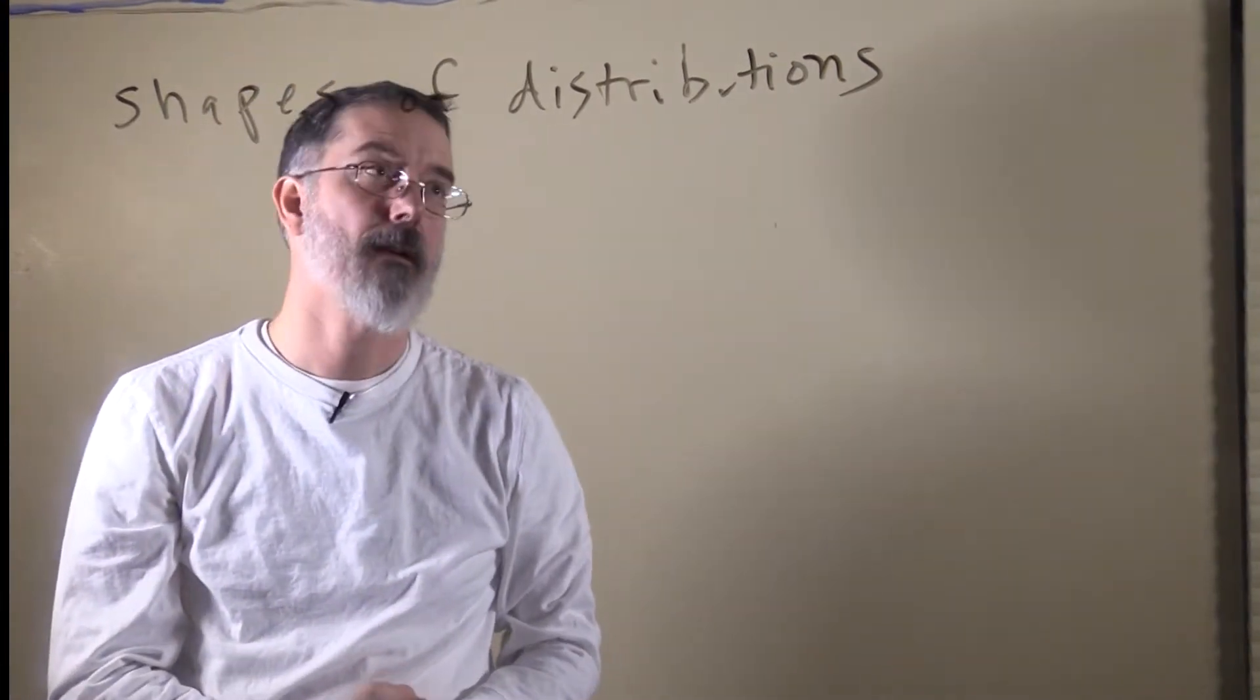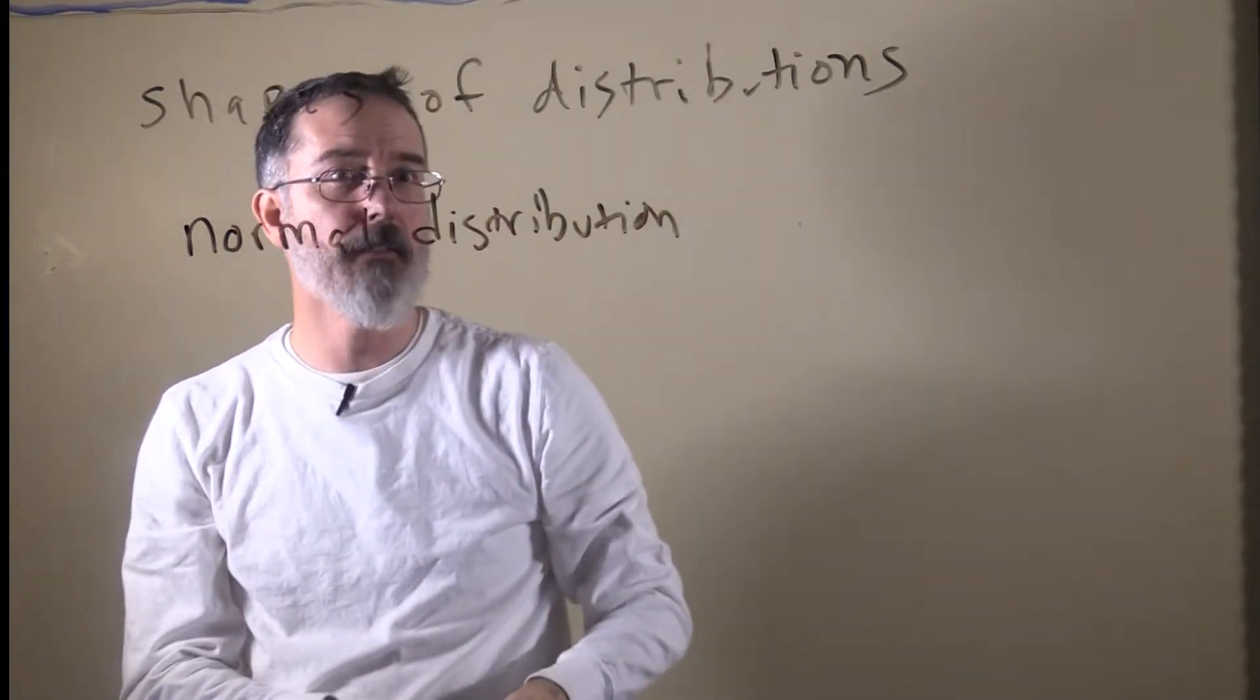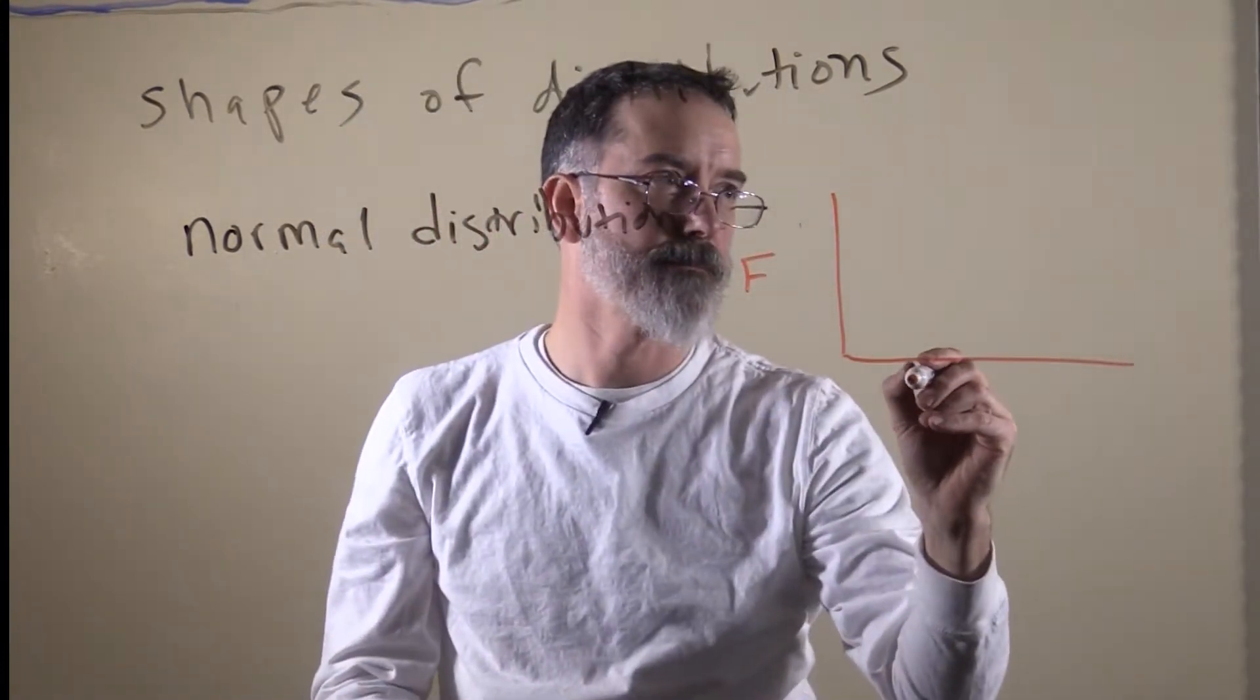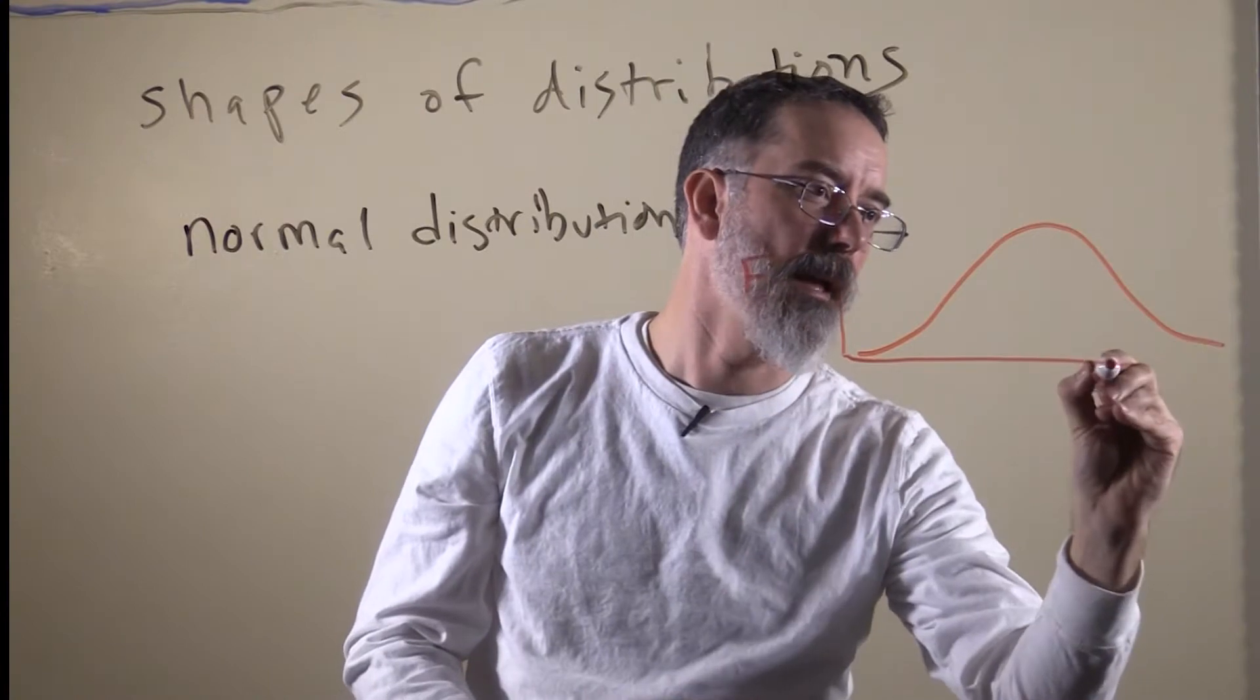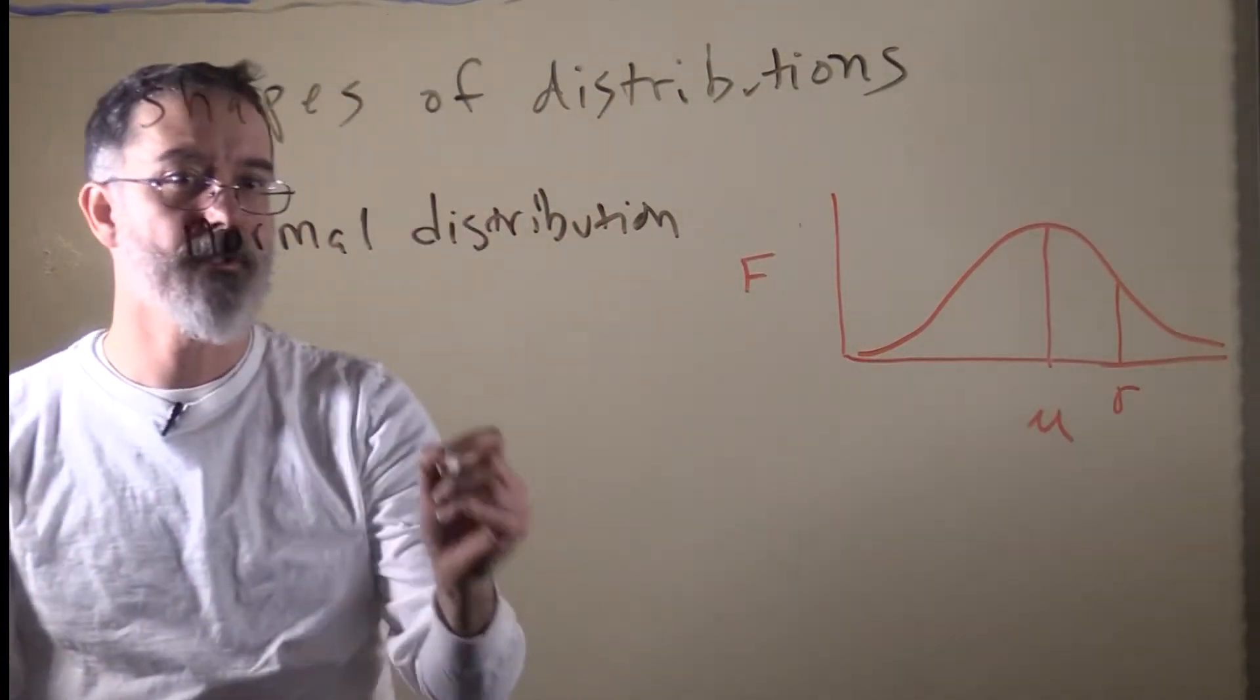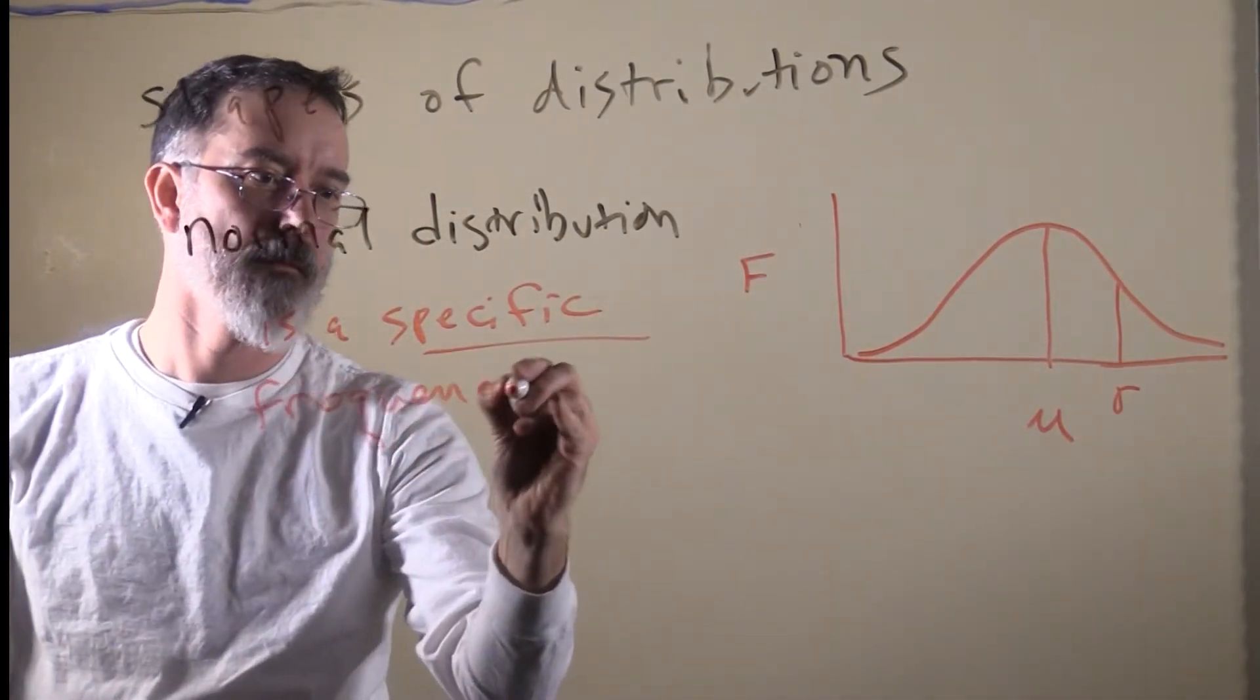We are going to start off talking about something called the normal distribution. This is the best known distribution. This is basically a frequency histogram that looks something like that. This is going to be the mean, that is going to have a standard deviation over here, and two standard deviations over there.